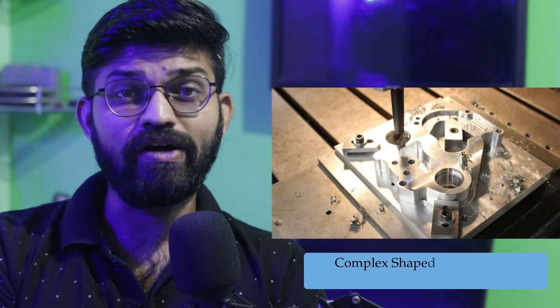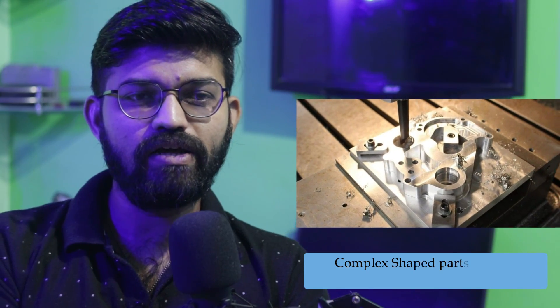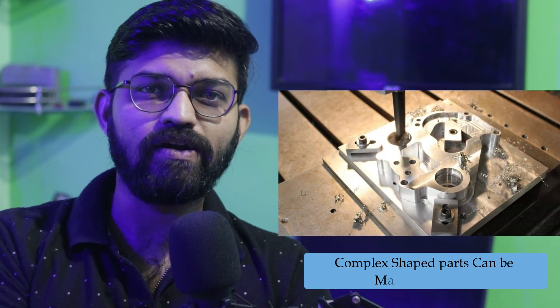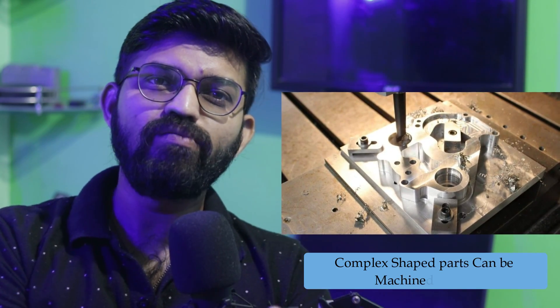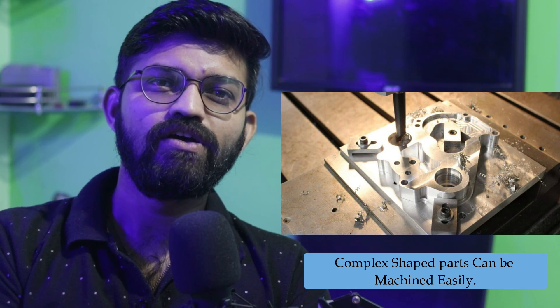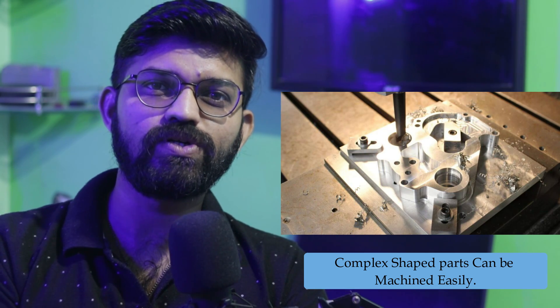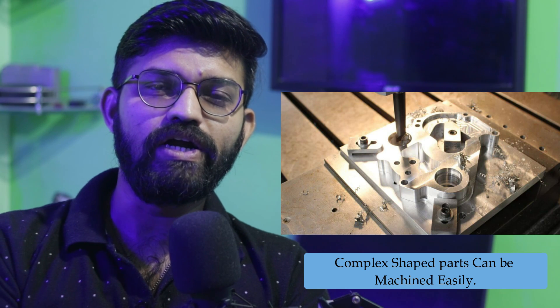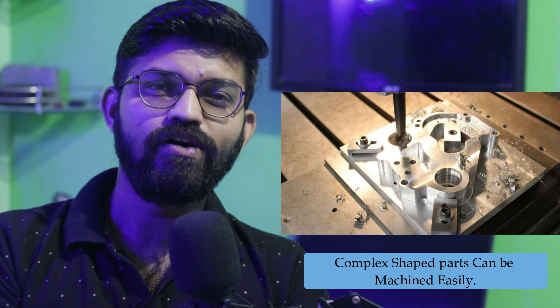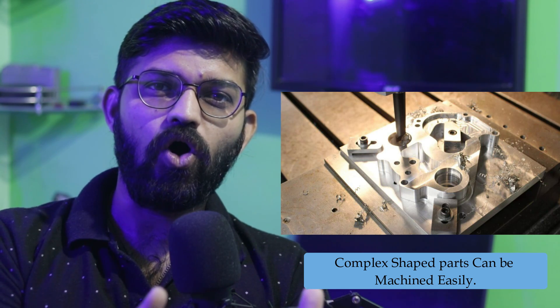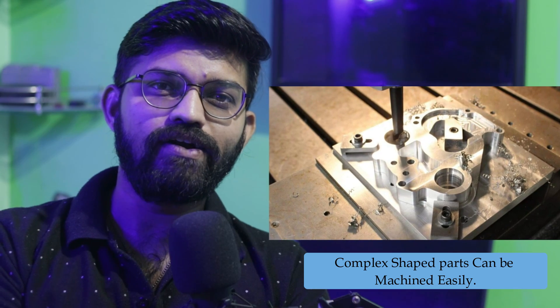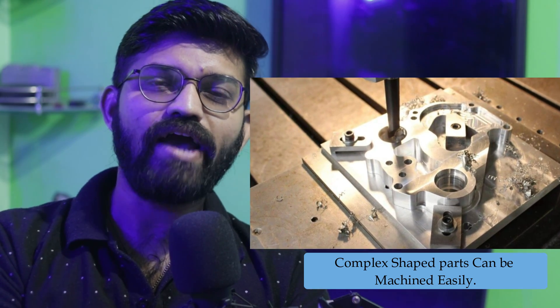Very heavy, bulky, and complex shaped workpieces can be machined very easily and effectively by using jigs and fixtures. They can be mounted rigidly on the machine body, and then certain operations can be carried out efficiently.